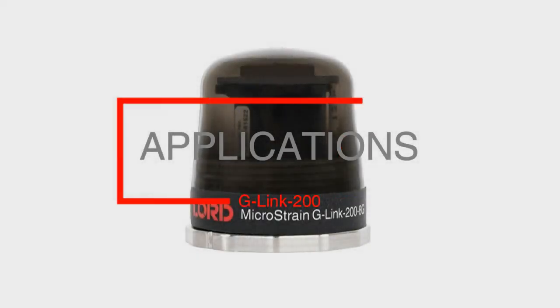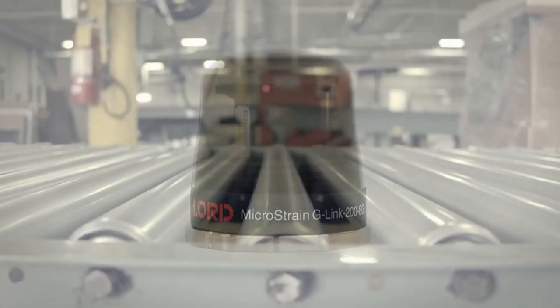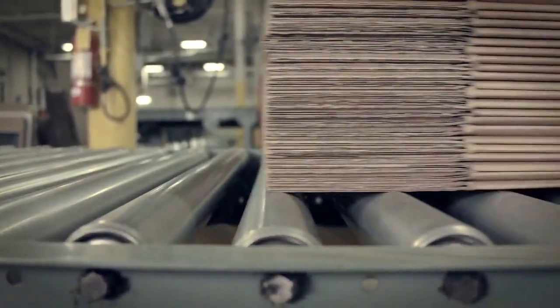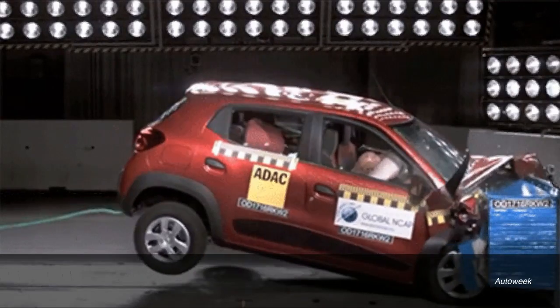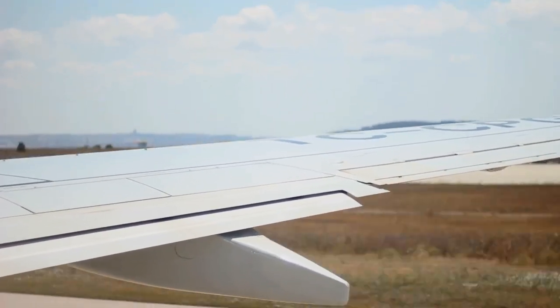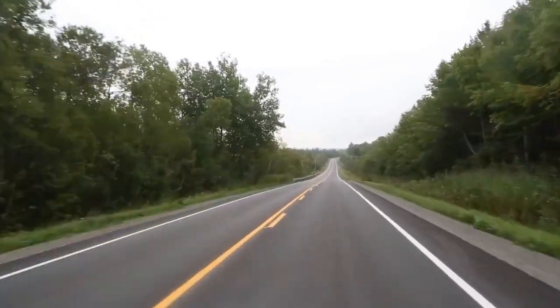The G-Link 200 is the perfect solution for a variety of applications including vibration monitoring, condition-based maintenance, impact and event monitoring, and health monitoring of rotating parts, aircraft, buildings and vehicles.